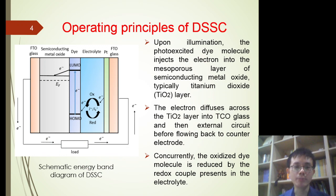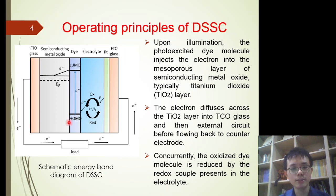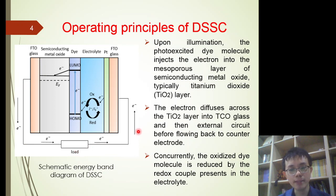Next, I will briefly discuss the operating principles of the DSSC. Upon illumination and photon absorption, the dye molecules are photoexcited from the electronic ground state to the excited state. The photoexcited dye molecules then inject electrons into the conduction band of the semiconducting metal oxide, typically the titanium dioxide layer. The electrons then diffuse across the TiO2 layer into the conductive substrate, such as the FTO glass, to the external load, before falling back to the counter electrode. Concurrently, the oxidized dye molecules are reduced by the redox couple present in the electrolyte, which completes the whole cycle.